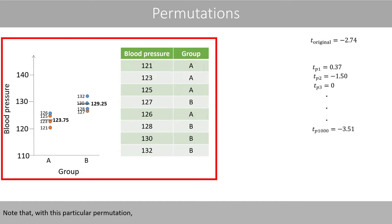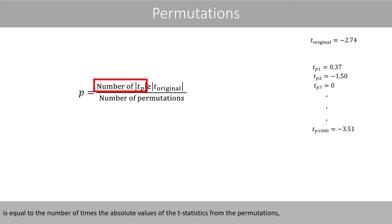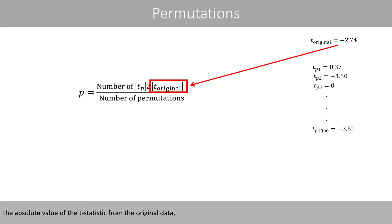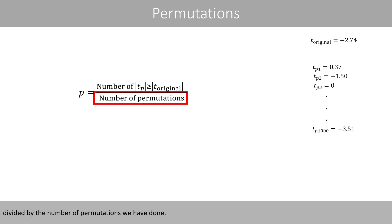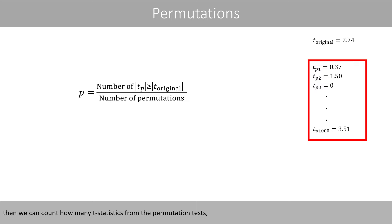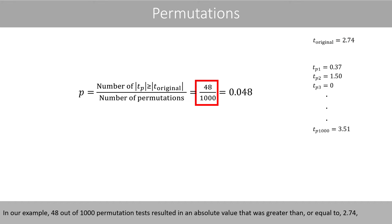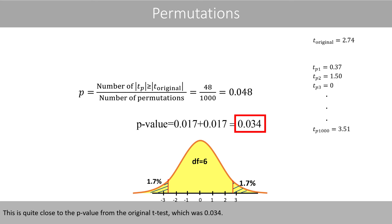Note that with this particular permutation, we happened to get a t-statistic that was actually more extreme than the t-statistic from the original data. The p-value of the permutation test is equal to the number of times the absolute values of the t-statistics from the permutations are greater than or equal to the absolute value of the t-statistic from the original data, divided by the number of permutations we have done. In our example, 8 out of 1000 permutation tests resulted in an absolute value greater than or equal to 2.74, giving a p-value of 0.048. This is quite close to the p-value from the original t-test, which was 0.034.